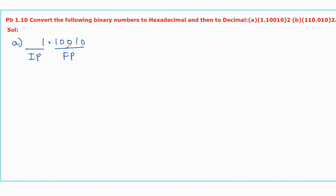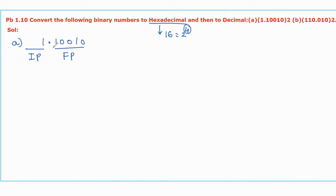Now we should convert this binary into hexadecimal first and then to decimal. To convert into hexadecimal, as the radix or base of hexadecimal is 16, when we convert in terms of power of 2 it becomes 2 power 4, where 4 represents the number of bits required to write one hexadecimal digit. So to write binary into hexadecimal, first divide the bits into groups of 4 bits each, starting from LSB for the integer part and starting from MSB for the fractional part.